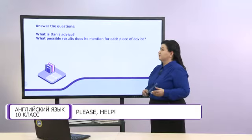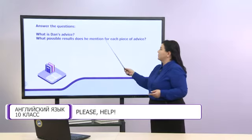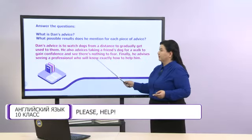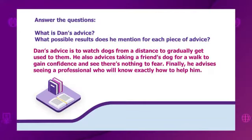Let's answer these questions: what is Dan's advice, and what possible results does he mention for each piece of advice? Dan's advice is to watch dogs from a distance to gradually get used to them. He also advises taking a friend's dog for a walk to gain confidence and see there is nothing to fear. Finally, he advises seeing a professional who will know exactly how to help.